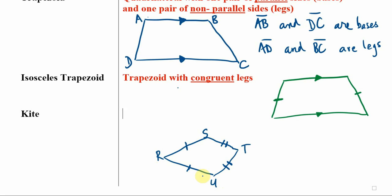So RS and RU are congruent, and TS and TU are congruent. But all four of them are not congruent to each other. Otherwise, they would be a rhombus. Okay, so let's put this definition down as well.